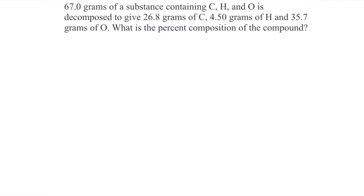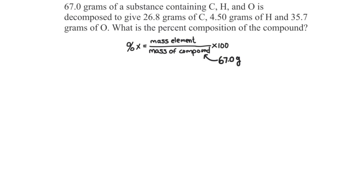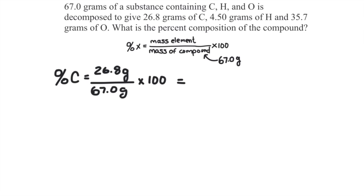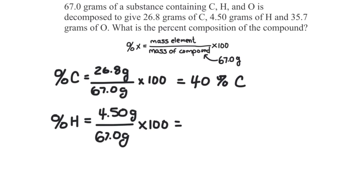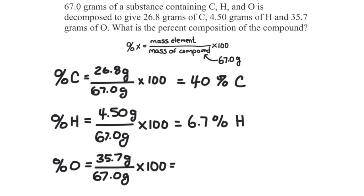Here's an example: 67 grams of a substance containing carbon, hydrogen, and oxygen is decomposed to give 26.8 grams of carbon, 4.5 grams of hydrogen, and 35.7 grams of oxygen. What is the percent composition? Percent composition equals the mass of the element divided by the mass of the entire compound times 100. The percent of carbon: 26.8 grams divided by 67 grams times 100 equals 40%. The percent of hydrogen: 4.5 grams divided by 67 grams times 100 equals 6.7%. The percent of oxygen: 35.7 grams divided by 67 grams times 100 equals 53.3%.